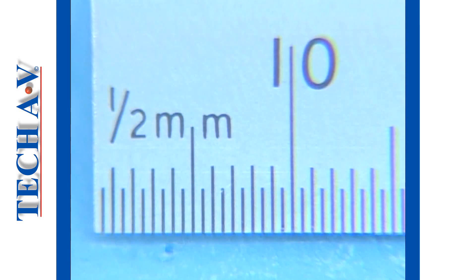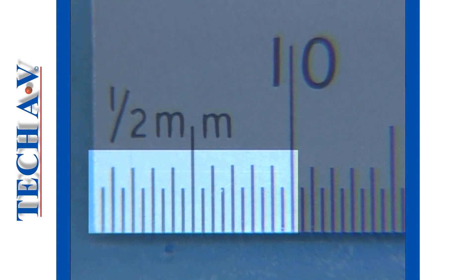Let's look at our scale through a magnifying glass, so that we can see more clearly the half millimeter division. Can you see that we now have 20 divisions between each centimeter? This is because each millimeter has been divided in two to make the half millimeter division line.